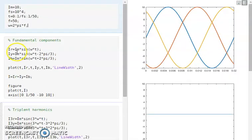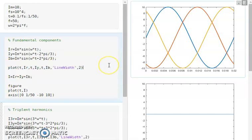I started with IR which is IM sin(ωt) and IY is IM sin(ωt - 2π/3) and IB is IM sin(ωt + 2π/3). Then I plotted all the three fundamental components and here you can see that fundamental components are well displaced with the phase difference of 2π/3.